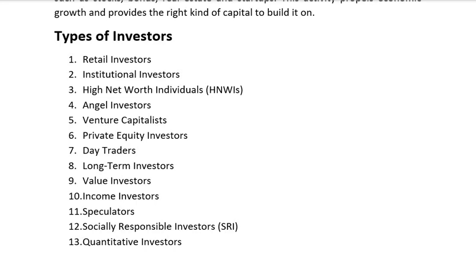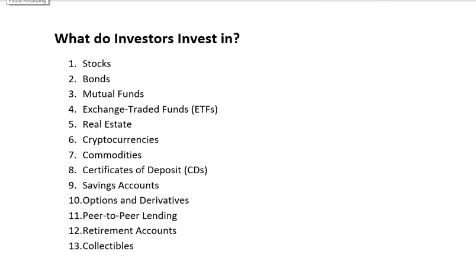People may also transition between these categories as their economic situation and options evolve. What do investors invest in? Investors have a wide array of options for where to allocate their capital. The preference of investment depends on different factors including the investor's financial goals, risk tolerance, time horizon, and funding strategy. First is stocks: investors can buy shares of publicly traded companies, becoming partial owners. Stocks offer the potential for capital appreciation and may pay dividends.